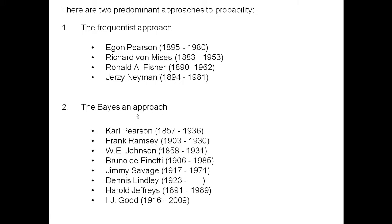Then there is the Bayesian approach to probability, named after the Reverend Thomas Bayes, and we'll see why in this talk. These are some of the well-known names associated with it. Only one of these people is still alive to this day — that's Dennis Lindley. When I first got involved in this field in the mid-80s, he was already not young. I used to write back and forth with him to England, and he would send back typewritten notes with whiteout on them. I.J. Good, also a famous statistician who just died, was one of the people who decoded Enigma using Bayesian statistics.